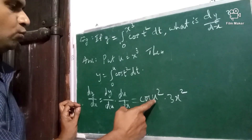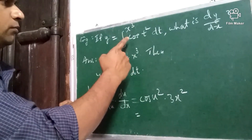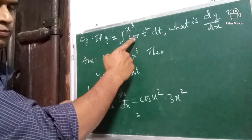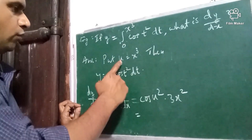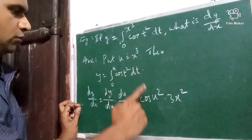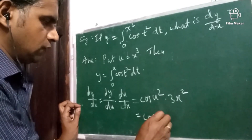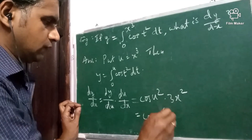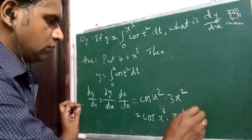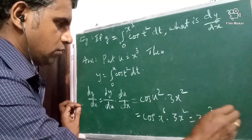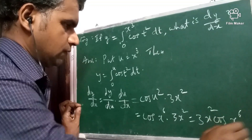Now look at u — this is a variable we introduced; in the given problem there is no u. So write u in terms of x: u = x³, so u² = x⁶. Therefore the expression becomes cos(x⁶)·3x², which gives 3x²·cos(x⁶). That is the answer.